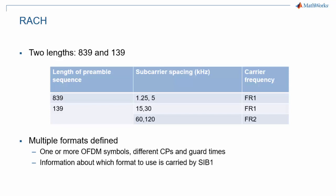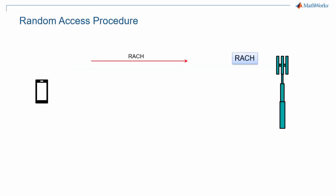We are not going into all the details of the different RACH formats here, but it is good to be aware that different formats exist, which vary in number of OFDM symbols, cyclic prefix lengths, and guard times. The information about which format to use is carried by the SIB1. We want to conclude this section about acquisition procedures with a simplified overview of the random access procedure.